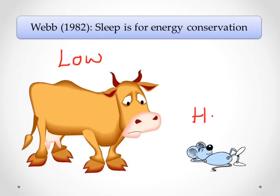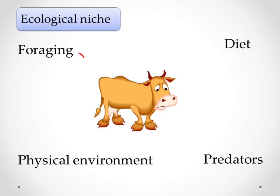Animals with high metabolic rates, such as small rodents, use more energy than animals with low metabolic rates, and so the theory suggests they will sleep for longer in order to save energy. Evolutionary theories propose that the ecological niche an animal fits into dictates its sleep pattern, relating to how an animal's environment exerts evolutionary pressure. An animal's sleep patterns will depend on factors such as the availability of food, whether it is a predator or prey, and how its physical environment affects its sleep opportunities.